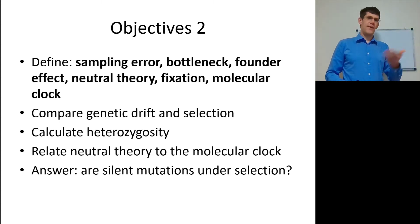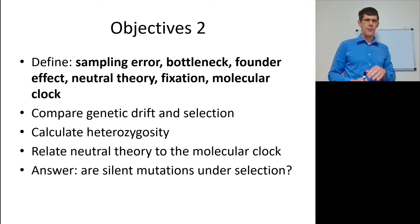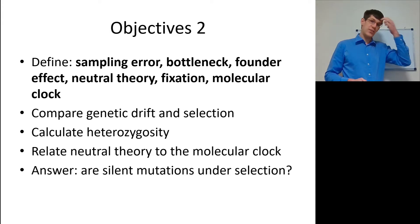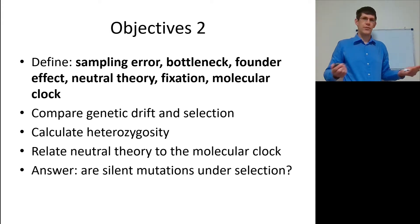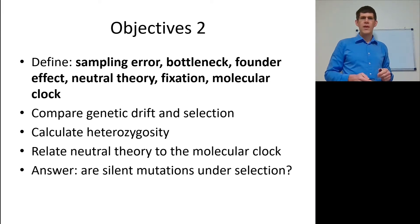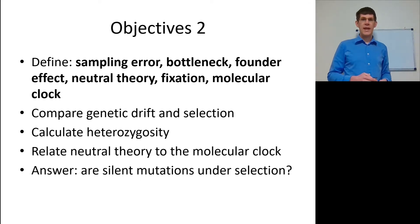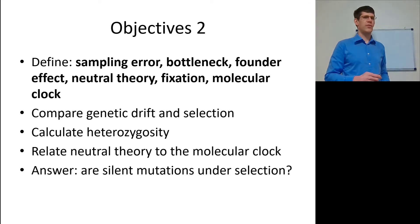I want you to be able to define sampling error, bottleneck, founder effect, neutral theory — that's a tough one — fixation, and molecular clock, another tough one. Compare genetic drift and selection, such as natural, artificial, and sexual selection. Calculate heterozygosity to an extent — we're really going to focus more on other things. Relate neutral theory to the molecular clock. And answer: are silent mutations under natural selection?